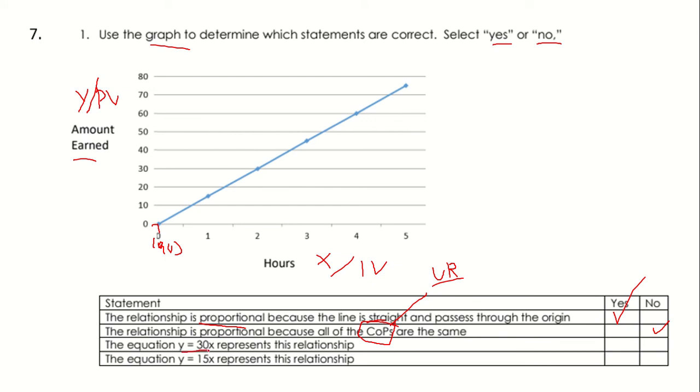Next, we have the equation y equals 30x represents the relationship. This equation is in the form y equals k times x, where k represents my constant of proportionality. So we need to see if 30 is our constant of proportionality.